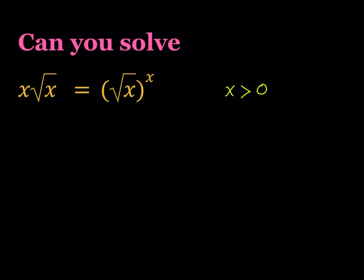Why not x equals 0? Because that gives us 0 to the power 0, which is very problematic. So we're going to try to avoid that. So if x is positive, then we're going to be looking for positive solutions.